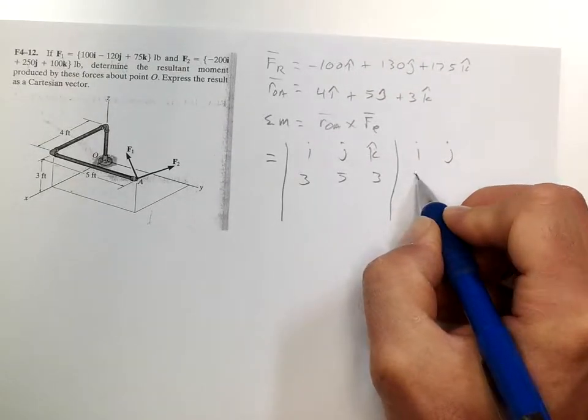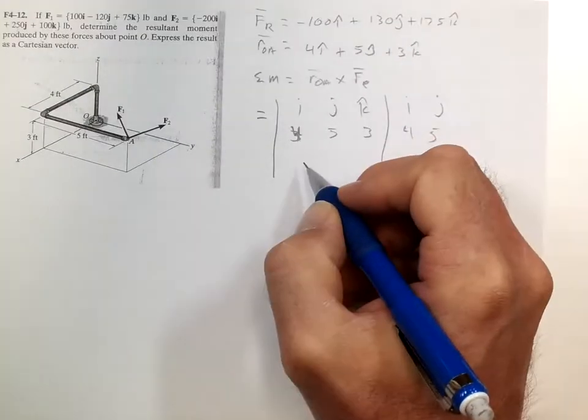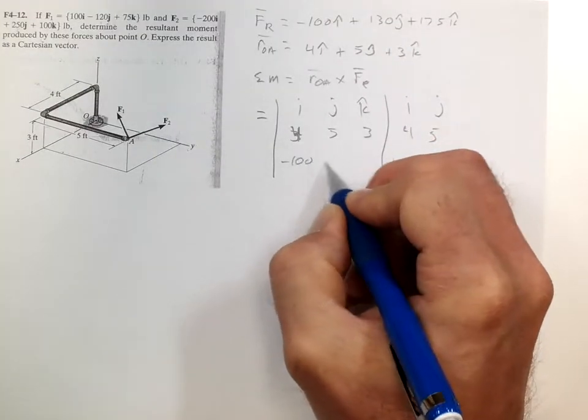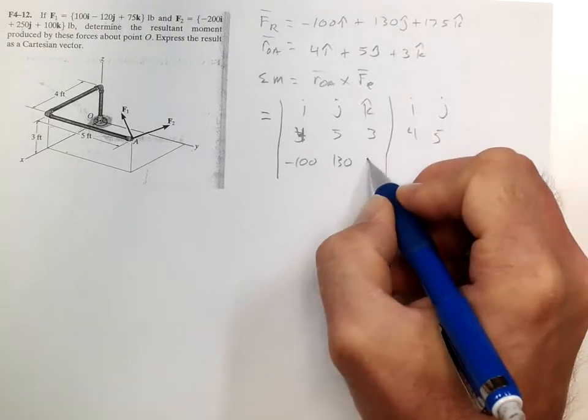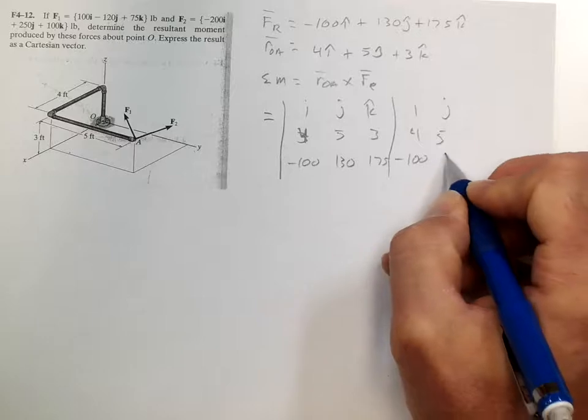And negative 100, 130, 175 in the third row. Negative 100, 130.